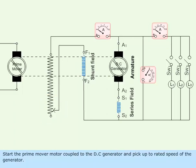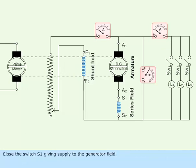Start the prime mover motor coupled to the DC generator and pick up to rated speed of the generator. Close the switch S1 giving supply to the generator field.